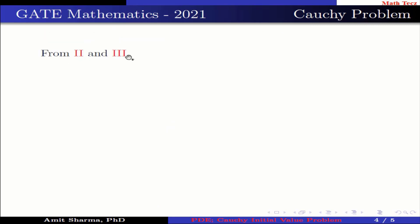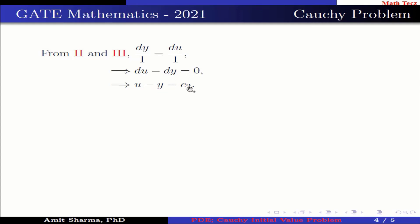Now from the 2nd and 3rd parts, we have dy/1 equals du/1. This implies du minus dy equals 0. Integrating both sides, we get u minus y equals c2, where c2 is an arbitrary constant.